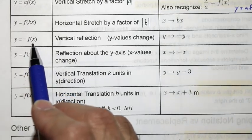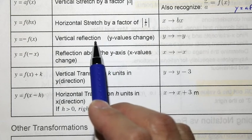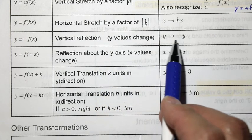y equaling negative f of x is a vertical reflection. You can think of it, the y values change, but you can also think this is a reflection about the x-axis. y becomes negative y.